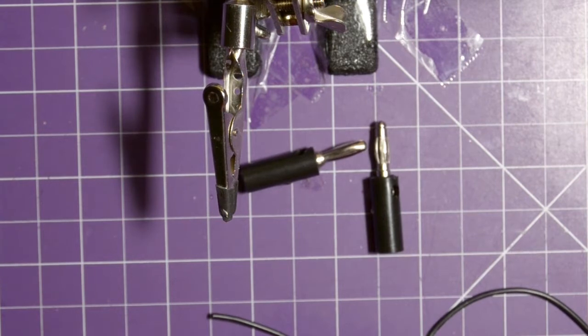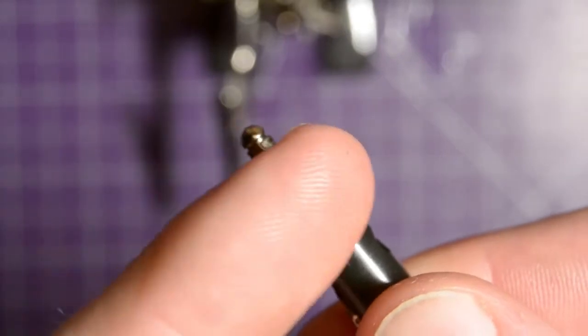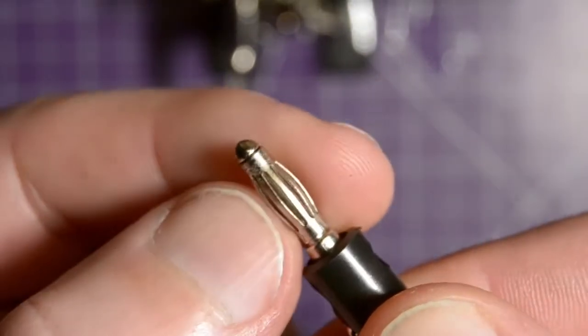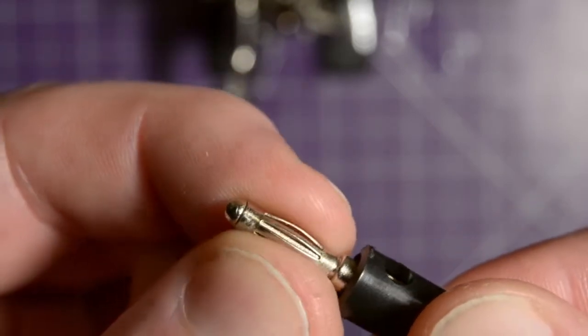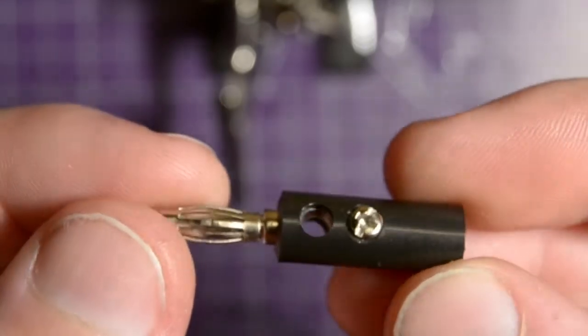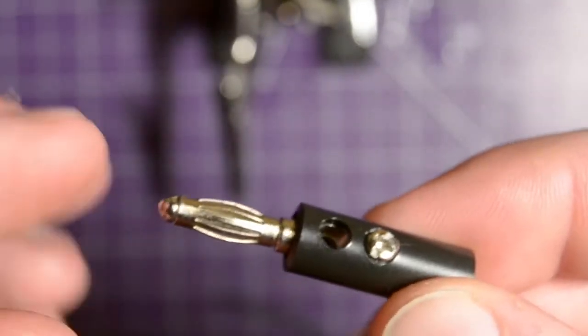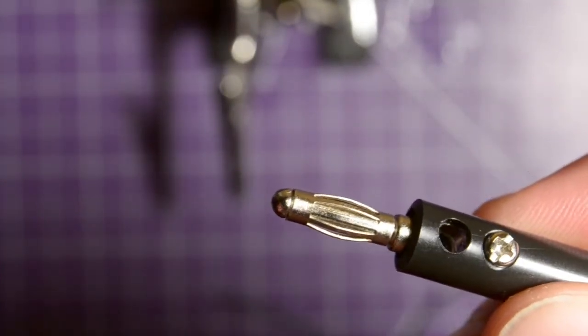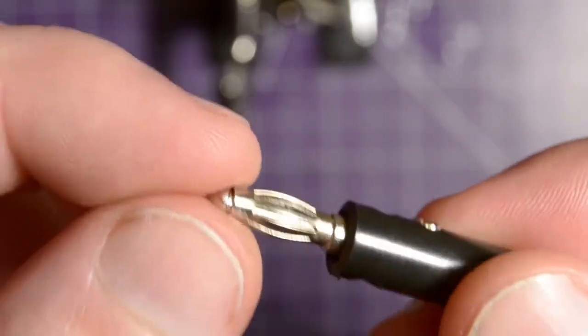But first let me show you something about the 4mm banana plugs that you may want to know before you go out and buy some. This is a pretty common type of banana plug. You see it has that cage? That cage basically when you shove it into an opening, it crushes down and makes contact on the pin. This is very standard and these are pretty cheap, but here's the deal.